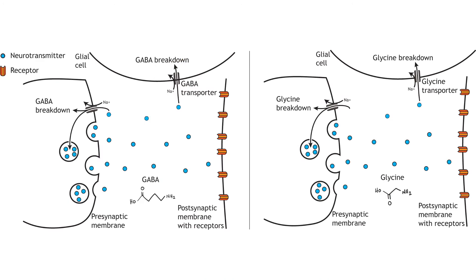Like glutamate, GABA and glycine action are terminated by either reuptake into the presynaptic terminal and packaging in synaptic vesicles, or through transport into glial cells where breakdown can occur. The GABA and glycine transporters also use the sodium electrochemical gradient to drive the movement of the transmitter across the membrane.